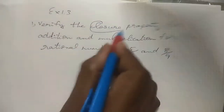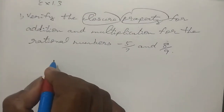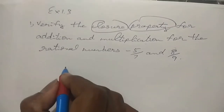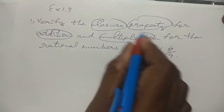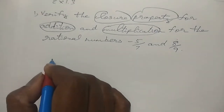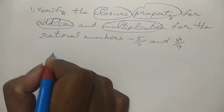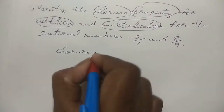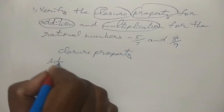So we have to find out what is the closure property. What is the closure property? We have to see for addition and for multiplication.